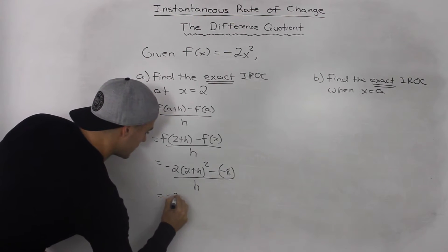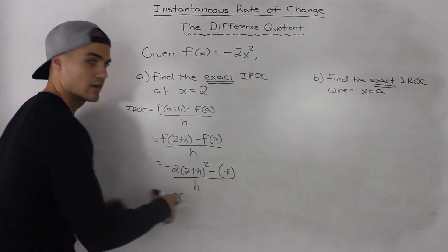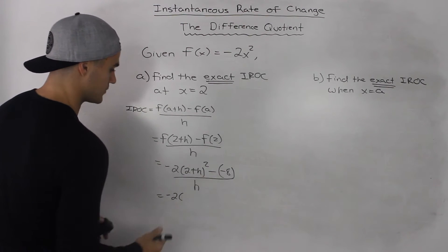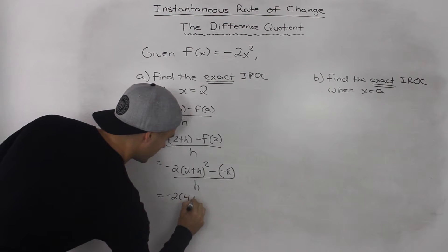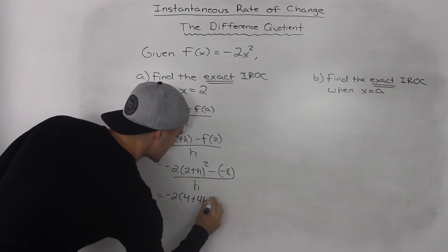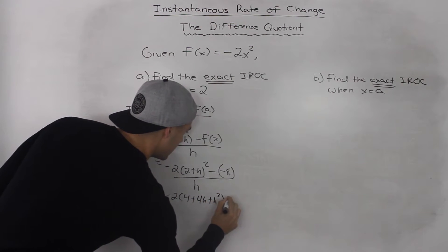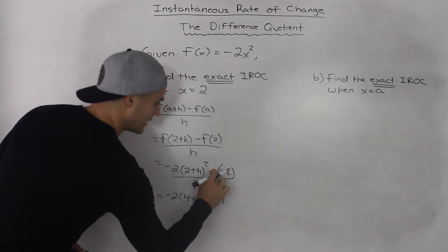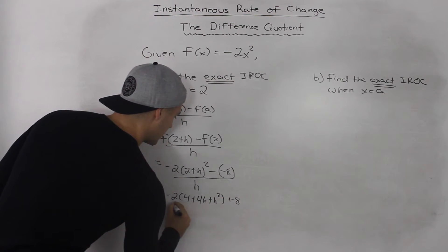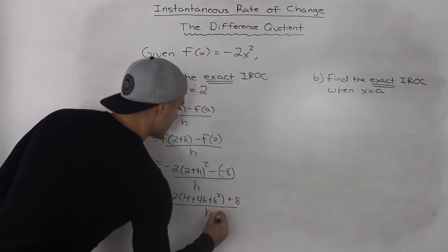If we take (2+h) and FOIL it — (2+h)(2+h) — we get 4 + 4h + h². Then minus negative 8 becomes positive 8, and this is all over h.